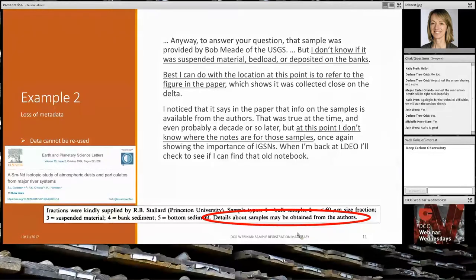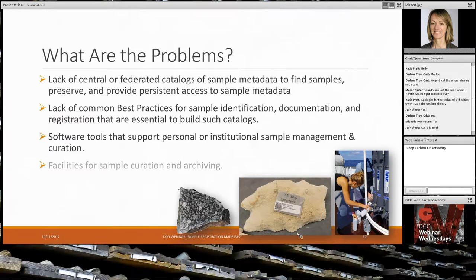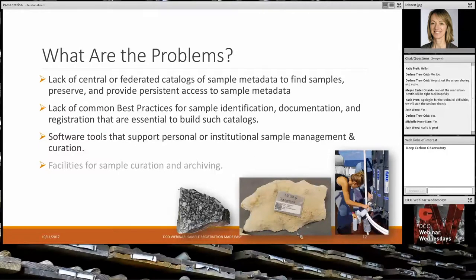So what are the primary problems? There is no central or federated catalog that has sample metadata preserved and persistently accessible. There are no common best practices for identifying samples, documenting them, describing them, and registering them in catalogs. And there is a lack of software tools that support personal or institutional sample management and curation. There is also a lack of facilities to share samples, but as I'm talking primarily about the digital side of samples, I won't get into that topic here.